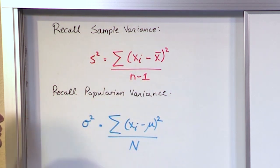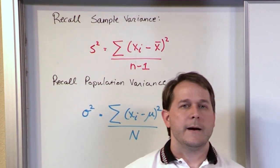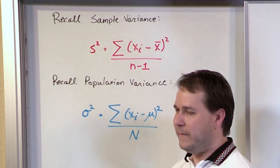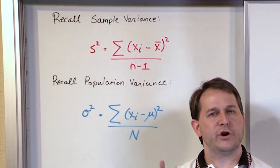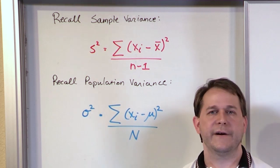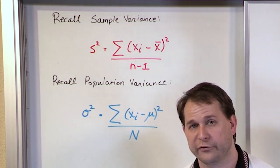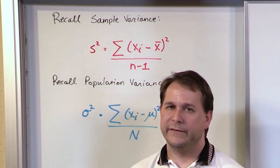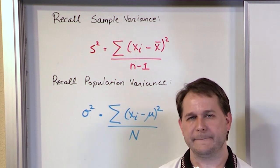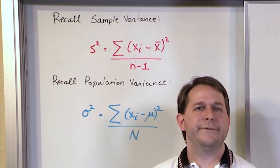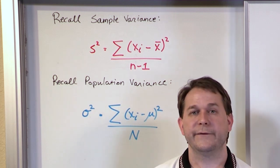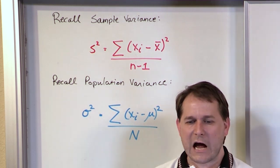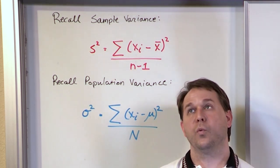These do measure the spread of the data. But the problem, if you want to call it a problem, is that because we squared everything, it measures in a relative sense how spread the data is — you can compare two variances to figure out which data set is more spread. But the problem is everything has been squared, so when we get a variance of 10.9 or 5, it's not in the units of our original data points anymore.